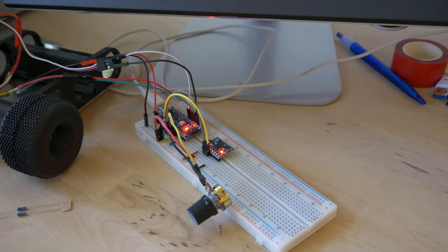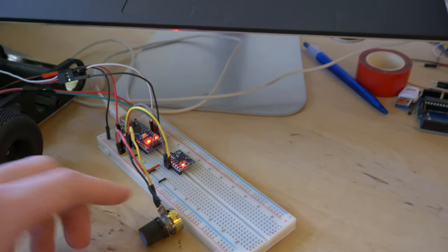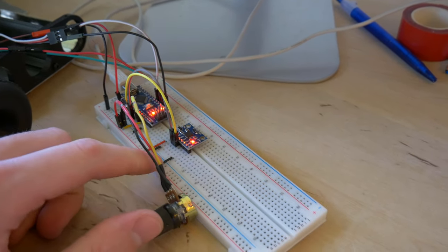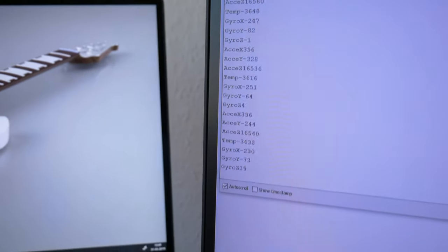From the example on the Arduino playground I have written my own sketch to read the raw data from the IMU. As you can see on the screen we are getting some data output.